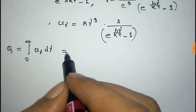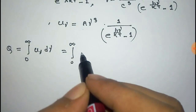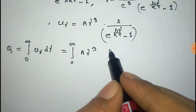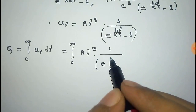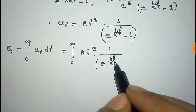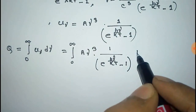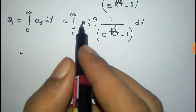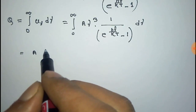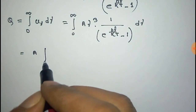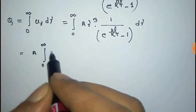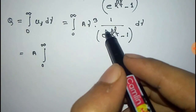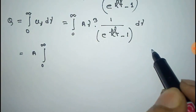Now we put the value of U_ν, integrating from 0 to infinity. We then take the substitution: let x = hν/kT, so that ν = xkT/h.